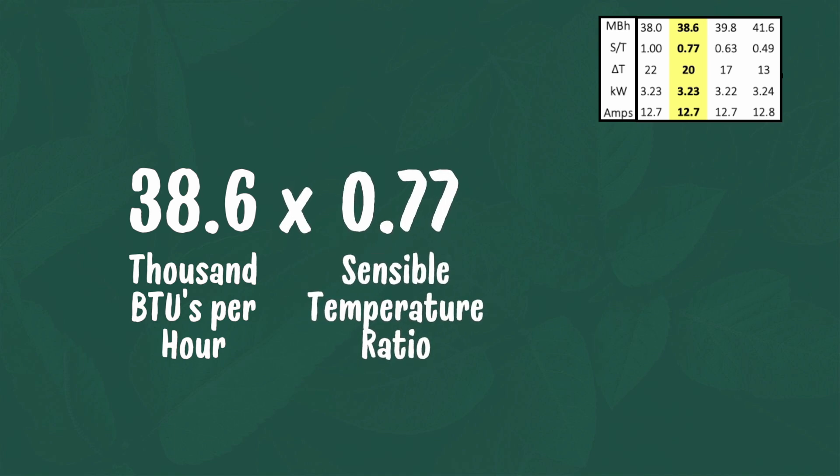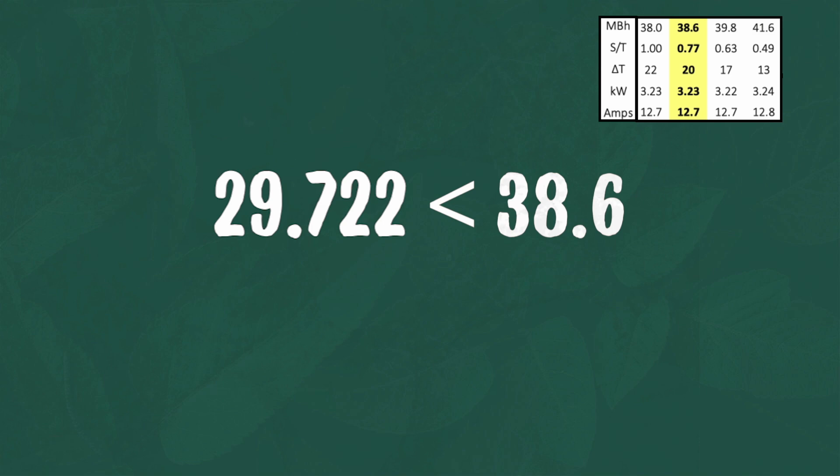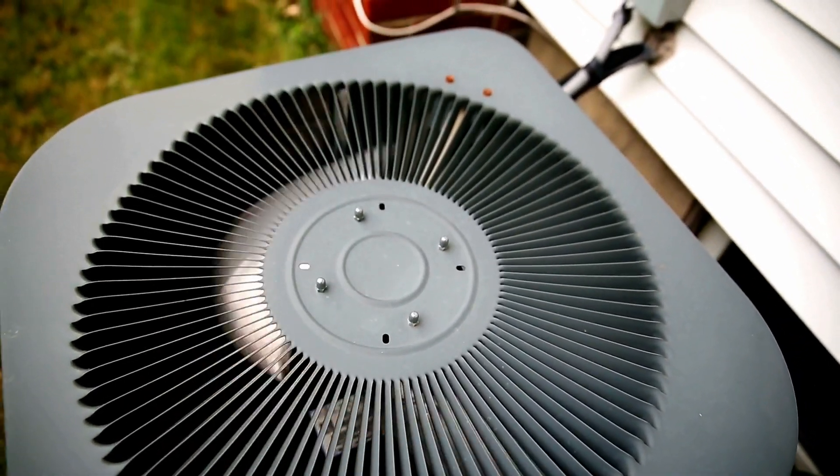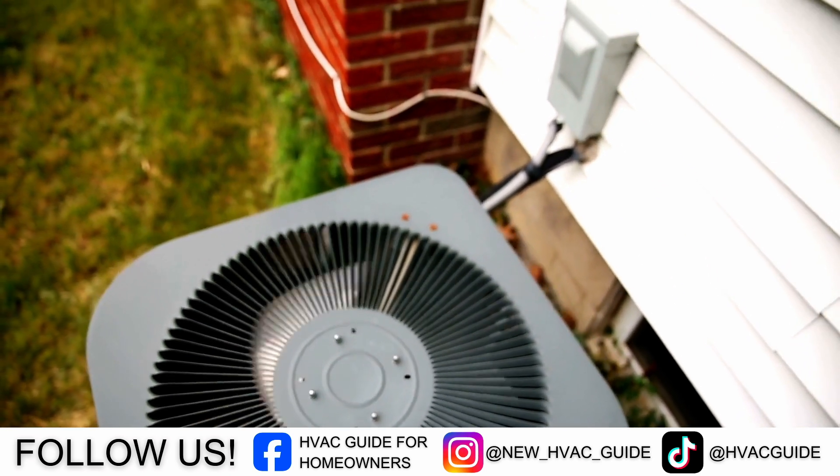So we're going to take the 38.6 and multiply it by 0.77, and the answer is your sensible BTUs. Whatever that math comes out to be, it's going to be less than 38.6. The sensible BTUs of this system are significantly less than 42,000, which is what a lot of guys think when they see that model number — they look at it and say that's a three-and-a-half-ton air conditioner. It is a three-and-a-half-ton, but in your area's conditions, this air conditioner really only does 38,600 BTUs of cooling, and then 77% of that is the sensible and whatever's left over is the latent.